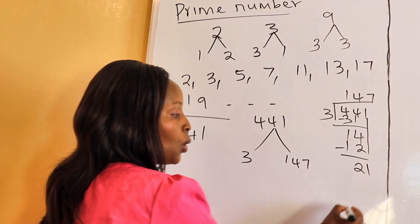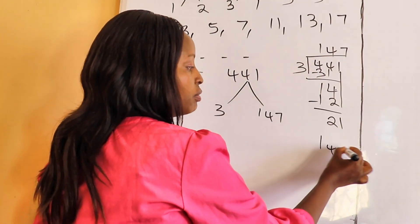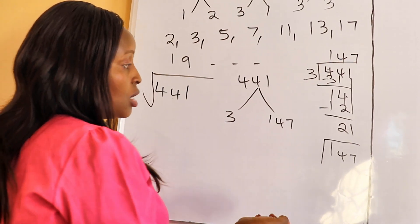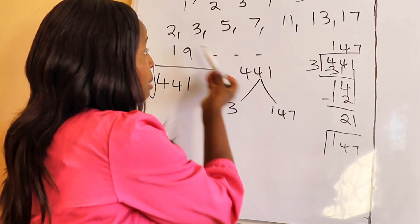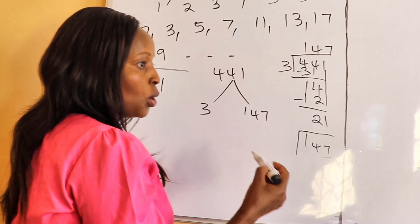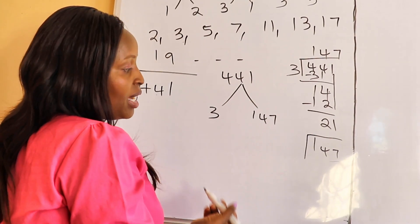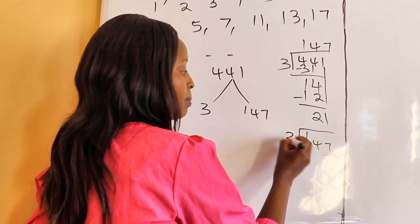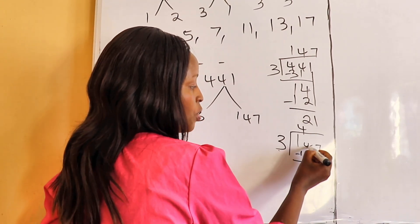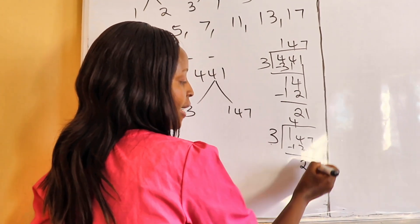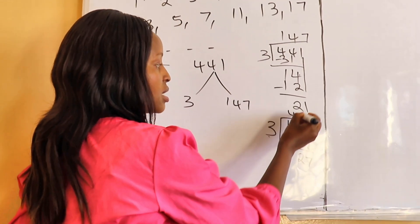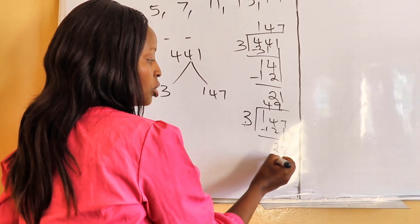Next, we move on with the division guided by prime numbers. We check if 147 is divisible by two — it is not. We try three: 14 divided by 3 is 4 (because of 12), take away gives 2, drop 7 — 27 divided by 3 is 9, because nine times three is 27.